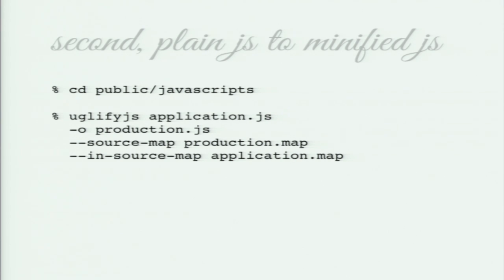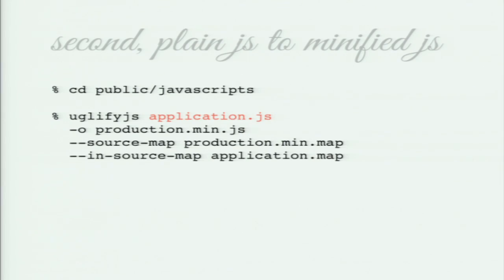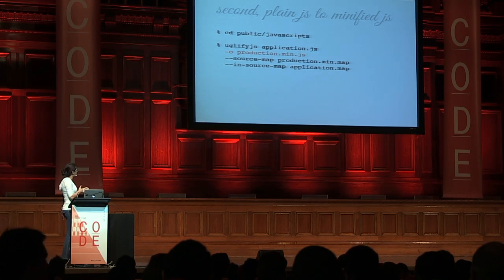The second step, if you have just normal plain JS files, is to take them and minify them. I changed to my JavaScript directory and used UglifyJS. I gave it the files I want, the output file named production.minified, a source map named production.minified.map, and because I'm doing it in two stages, you can also add an option for an in-source-map to take my original application.map, so it goes through two stages — first the CoffeeScript map, then through to the original CoffeeScript file.